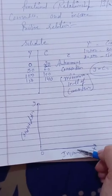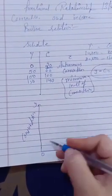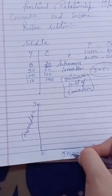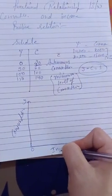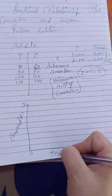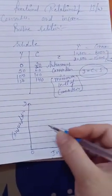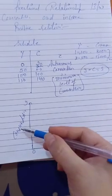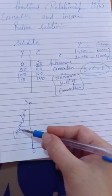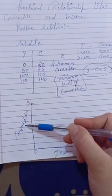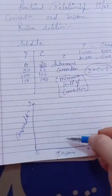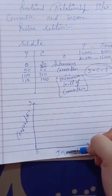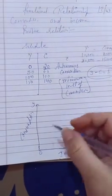On the x-axis, we always place the factor that is independent. Income is independent — it does not depend on anything else. But consumption depends on income, so consumption is the dependent variable and is placed on the y-axis. Y-axis always has the dependent variable; x-axis always has the independent variable.